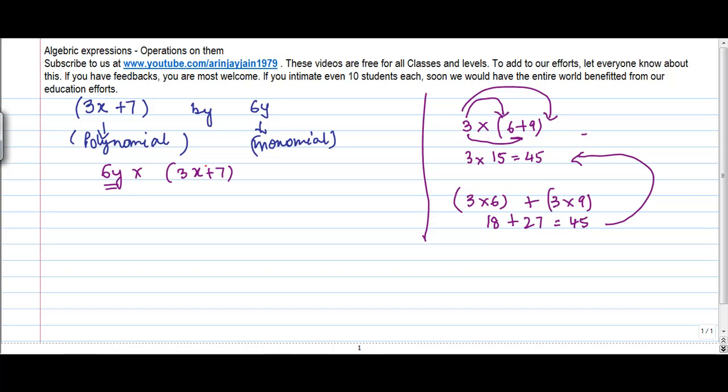6y into 3x plus 7 would be equal to 6y into 3x. So whatever is the number here, I multiply it first by the first term, plus 6y into 7.